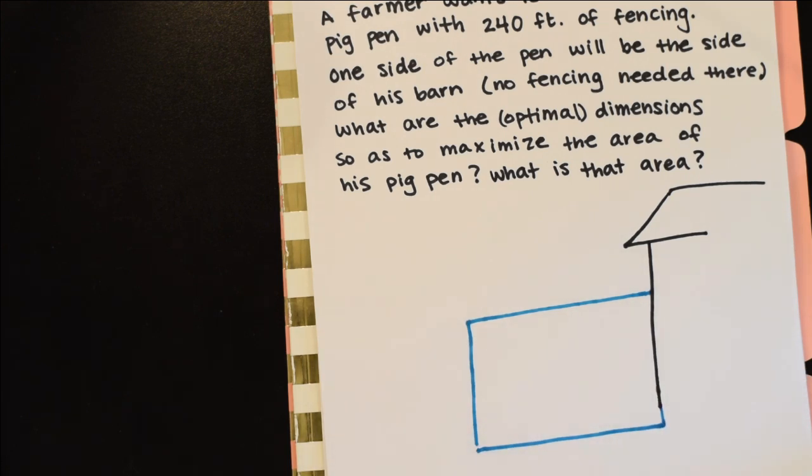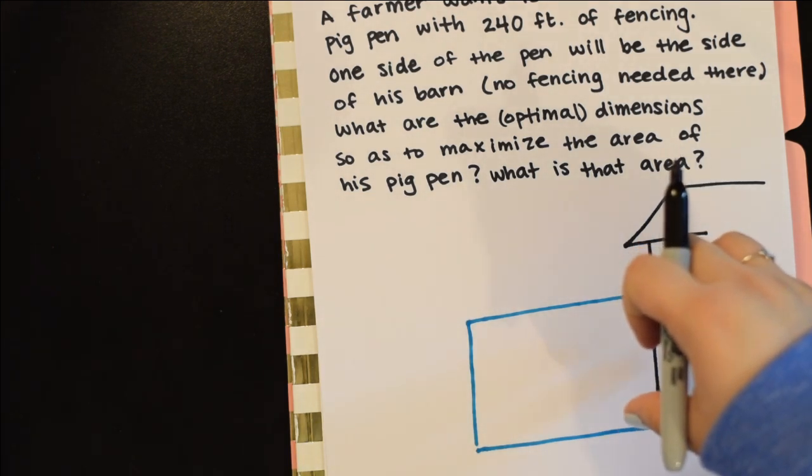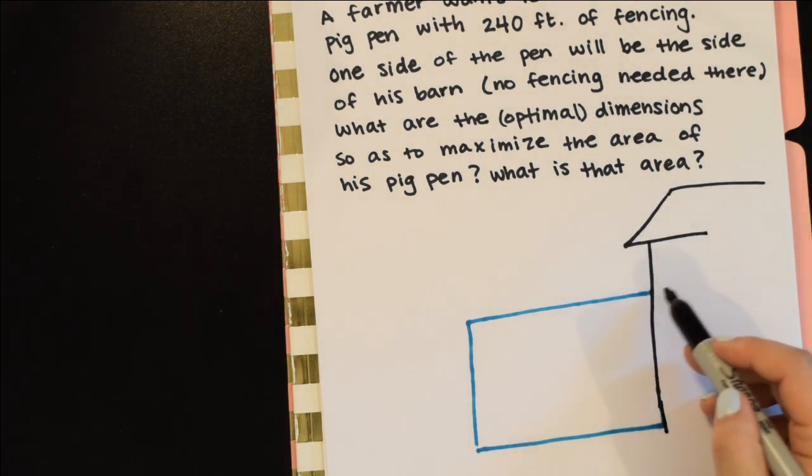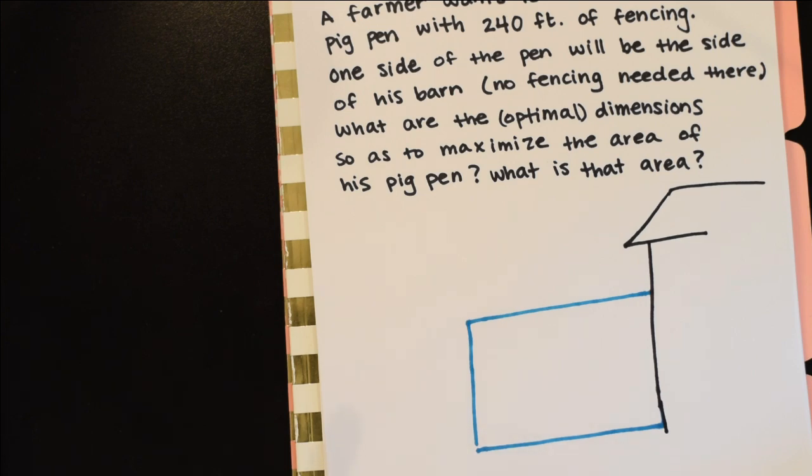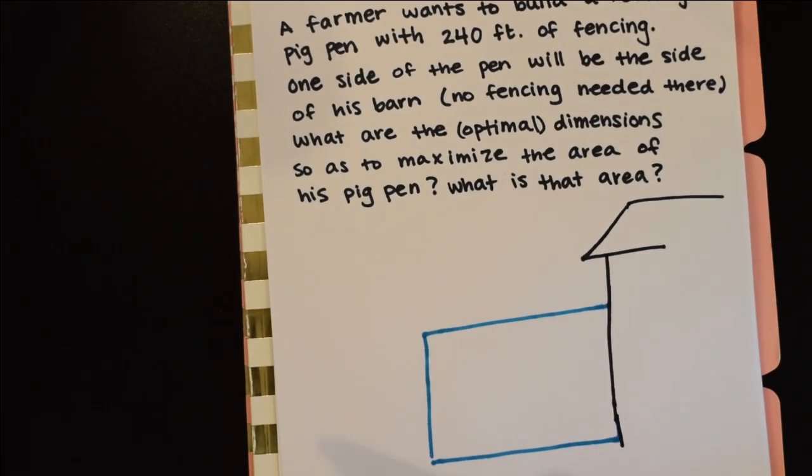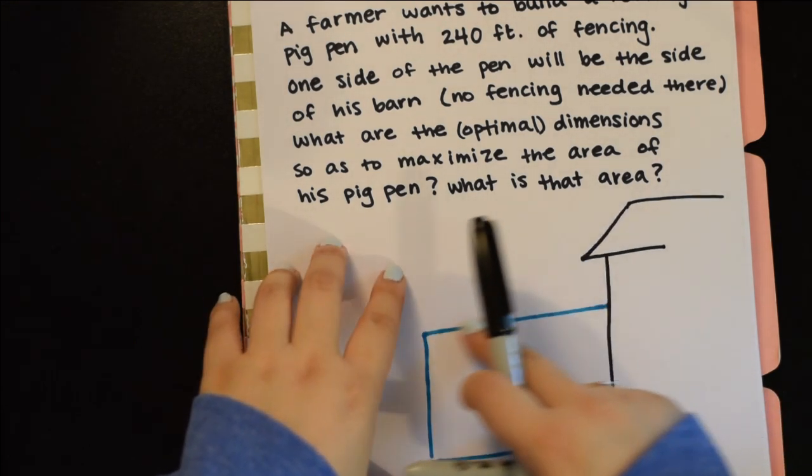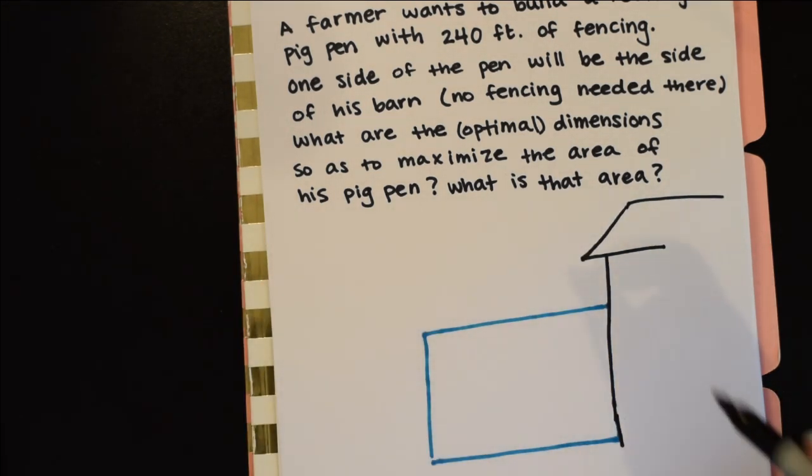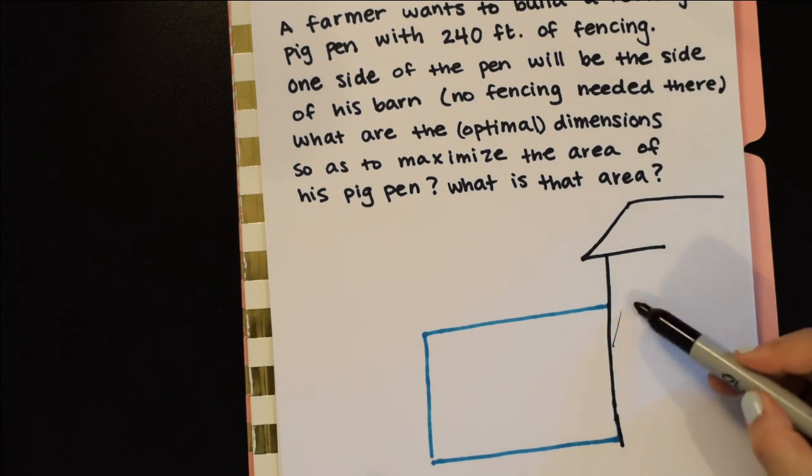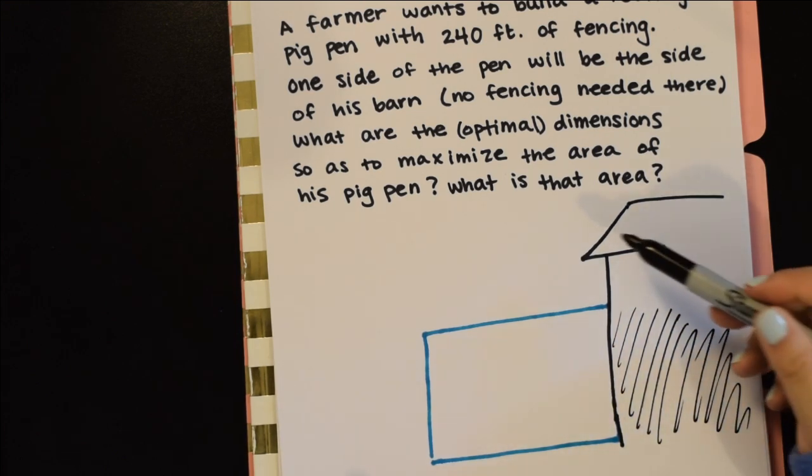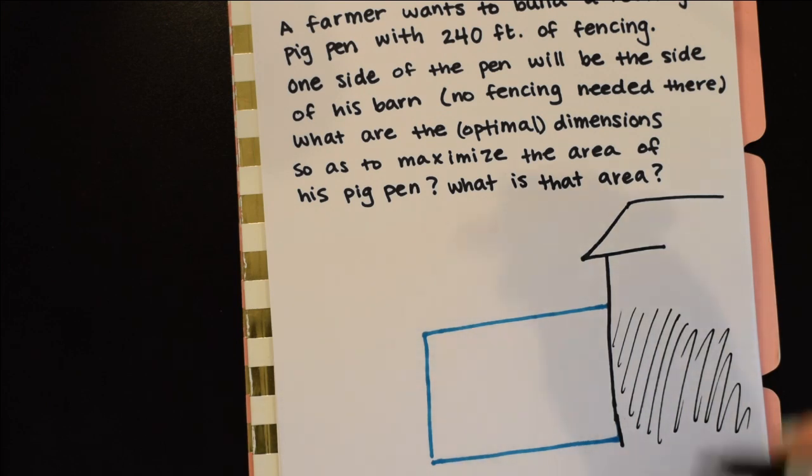He has 240 feet of fencing and we don't need to worry about that wall. We're just going to make some kind of pen like this. Technically this isn't even the right perspective because I'm looking downwards, so you would actually only be seeing the top of the barn. But that's okay.